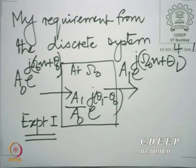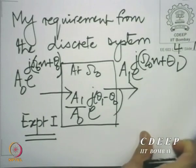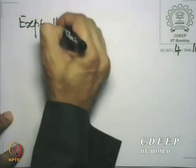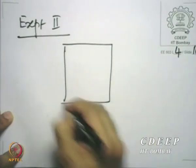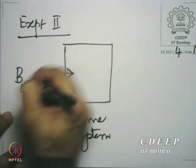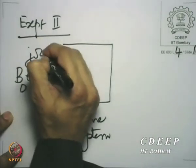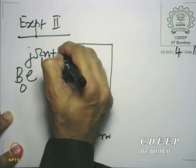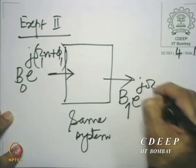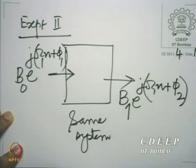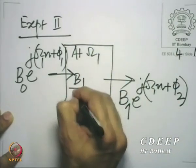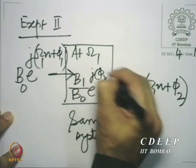Experiment two — same system but different input: b_0·e^(j·omega_1·n + phi_1), some different frequency. Out comes b_1·e^(j·omega_1·n + ...) — same frequency but of course phase and amplitude can change. Therefore, at omega_1, this is described by the ratio (b_1/b_0)·e^(j·(phi_2 − phi_1)).